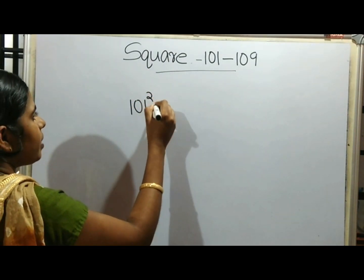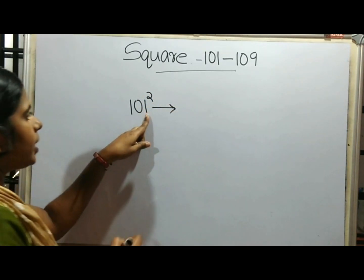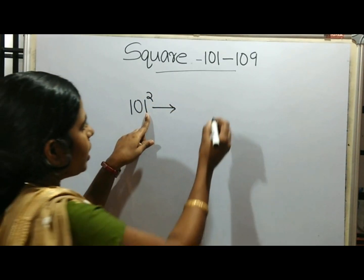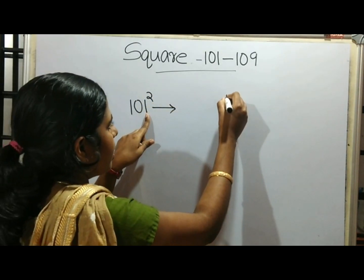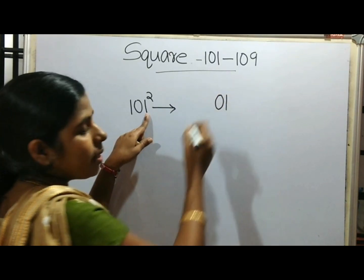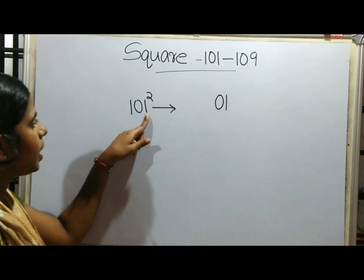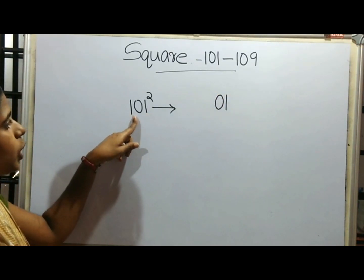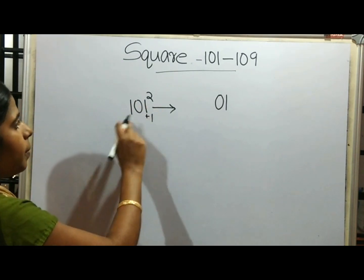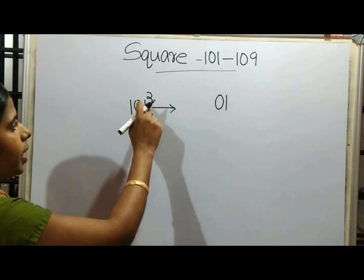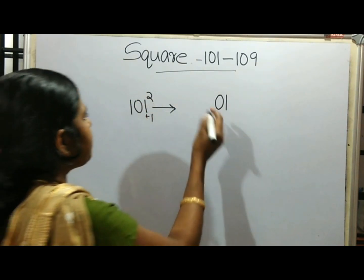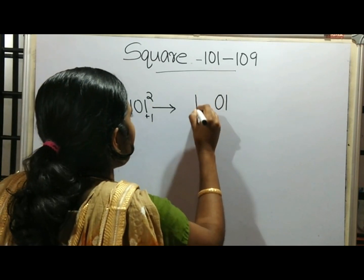Take 101 squared. Note that when you do a square, it becomes a square. With that, we will create a zero. 101 is 100 plus 1. The last digit is not 100. It will be one digit — 1 is 1, and 2.